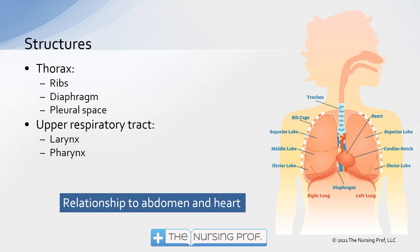We also have the pleural space — that's the area between the lung and the ribcage. There's a tiny bit of fluid in there that helps to lubricate so that the lung doesn't rub up against the ribcage.